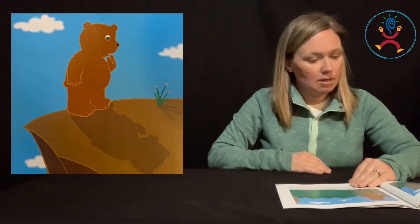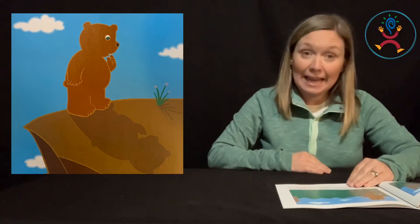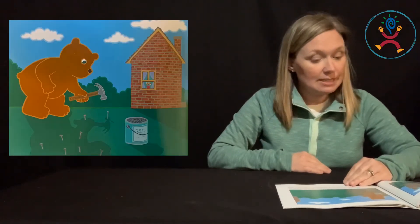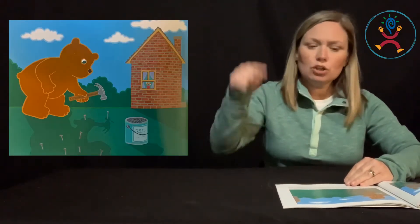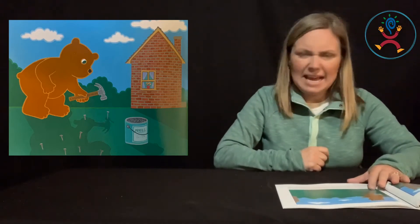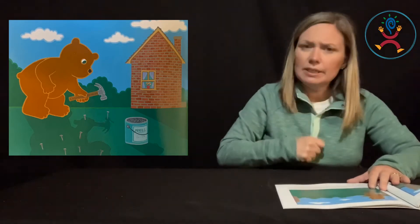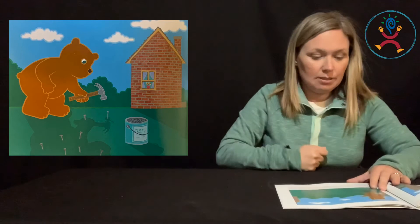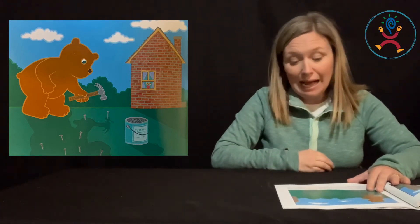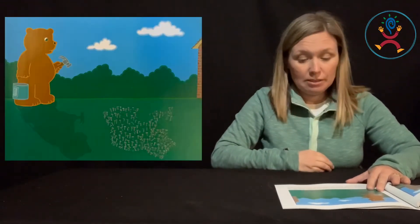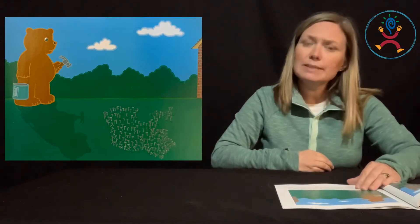Now Bear was very annoyed. So he went home and got a hammer and some nails to nail his Shadow to the ground. He hammered and hammered and hammered. But no matter how many nails he hammered, he couldn't nail Shadow down.